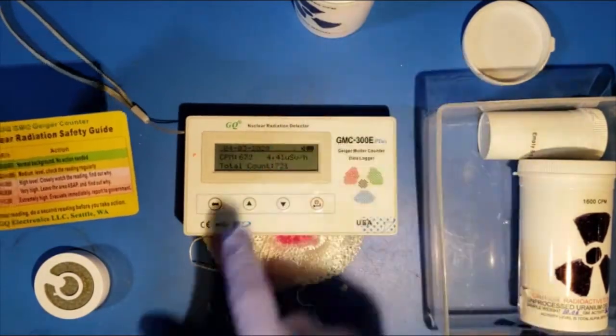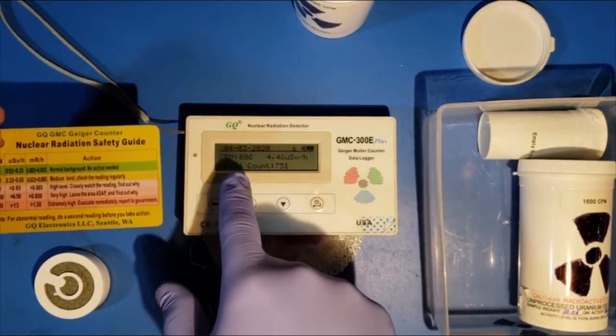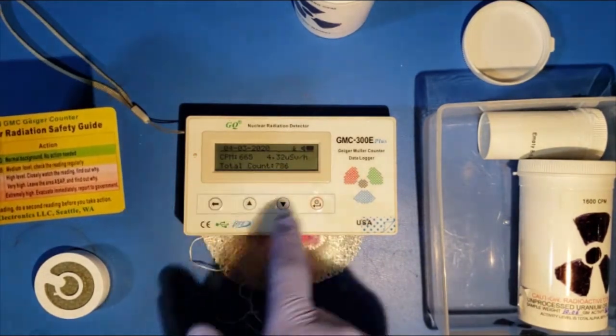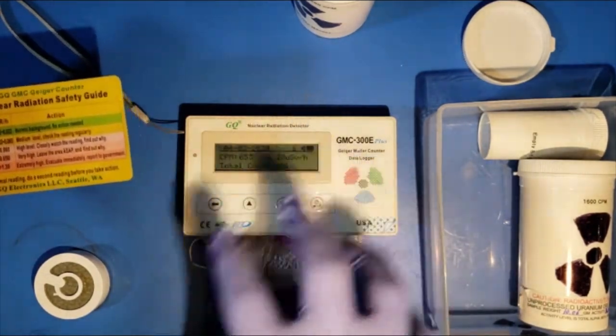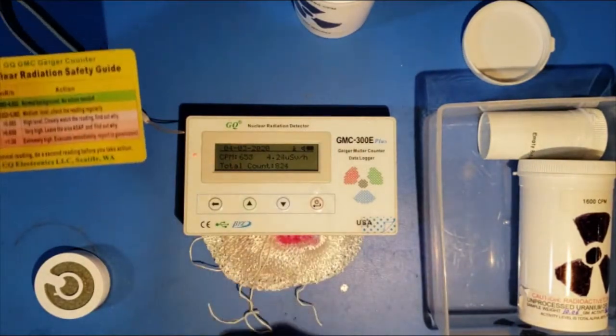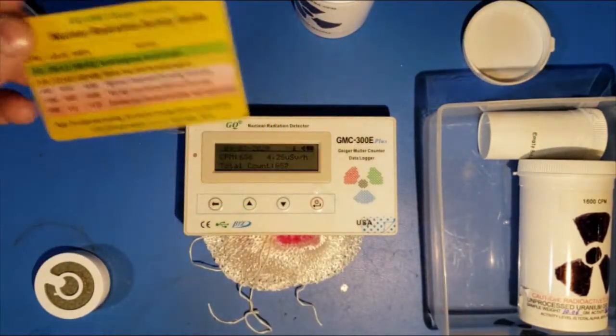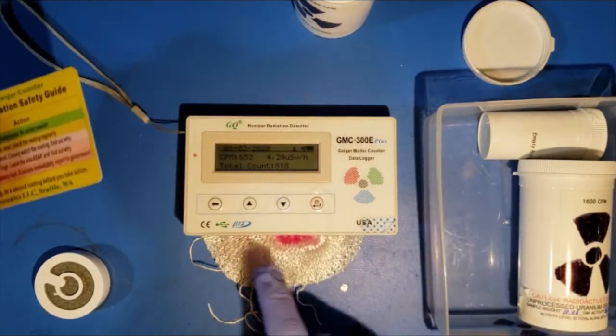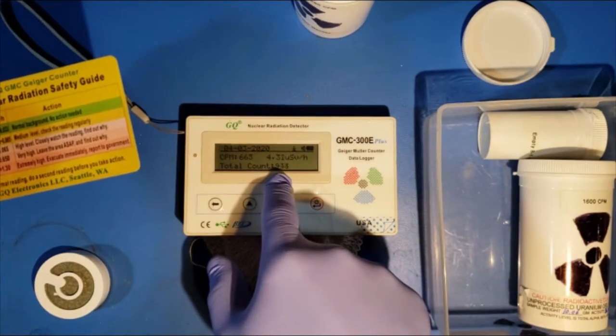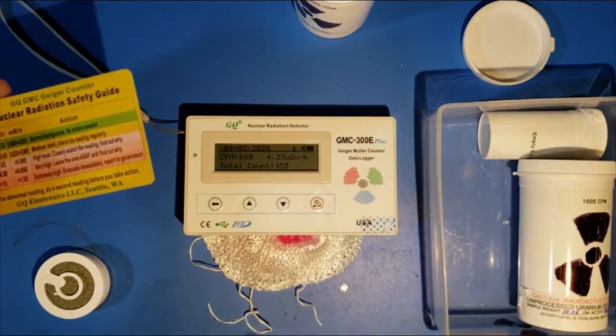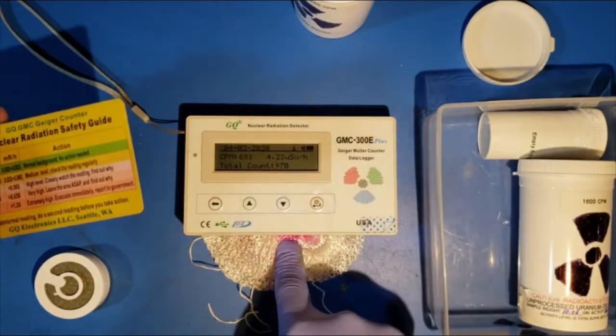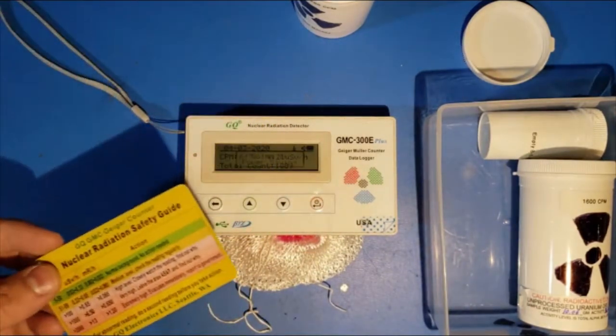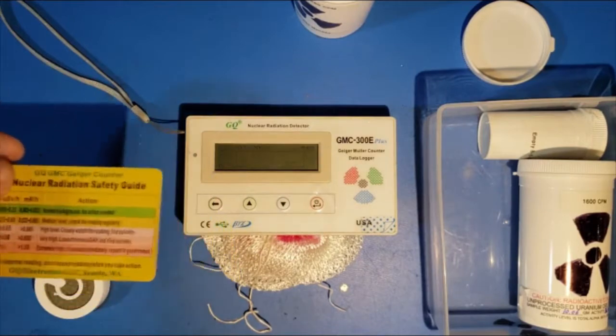So, if we look at the reading we're getting from the thorium lamp mantles right now, we're getting about 680 counts per minute, and it's fluctuating up and down. So that's about the constant reading you're gonna get with the detector right on it. That's pretty significantly above background, but in terms of short exposure, it is not too bad. A total count here of 944, for the exposure being right on top of it for the duration of this video, is significantly less than a normal x-ray, or a normal plane flight.